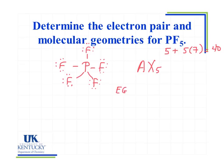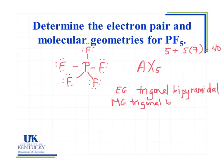So our electron geometry, because we have five groups, will be trigonal bipyramidal, and because all of the groups are bonding groups, our molecular geometry will also be trigonal bipyramidal.